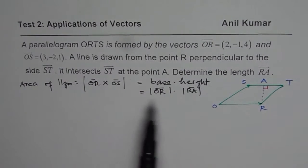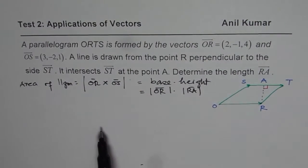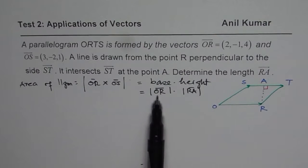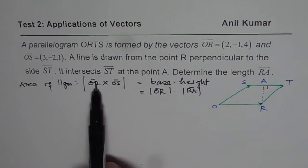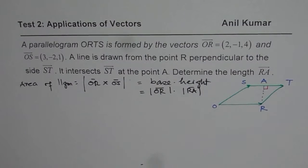So clearly from here we can find the cross product given these two vectors and equate it to magnitude of OR times magnitude of RA. So when I divide this by this, we get magnitude of RA. So that is the kind of strategy which we have here.